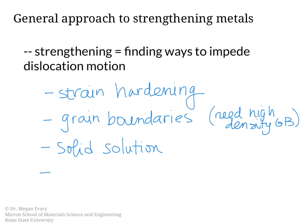A fourth way is precipitation hardening. For precipitation hardening, you need a multi-component system, so many alloy systems are also strengthened with the presence of precipitates.